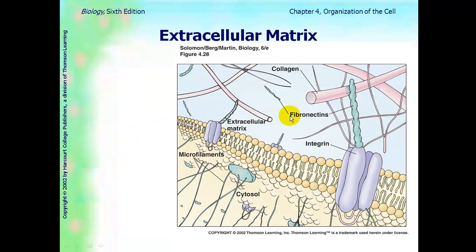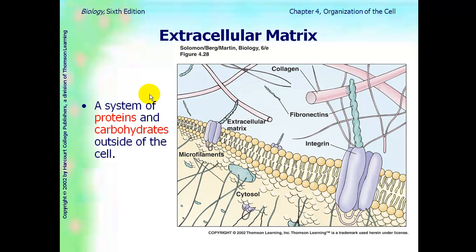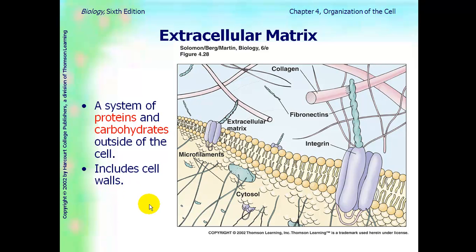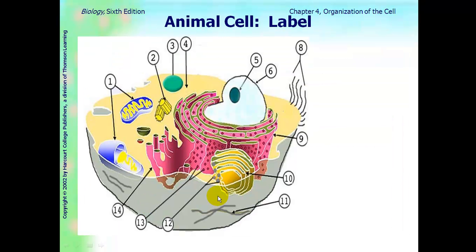Outside the cell isn't just empty space — there actually is a structure called the extracellular matrix. It's a system of proteins and carbohydrates that are outside the cell, and it includes the cell wall.